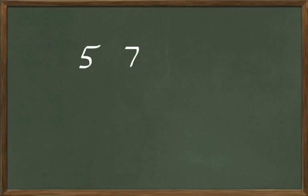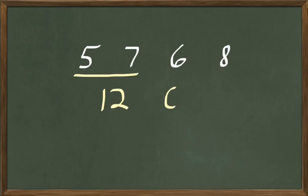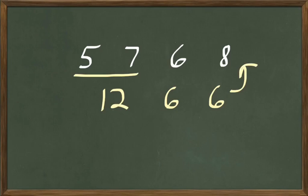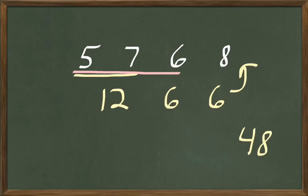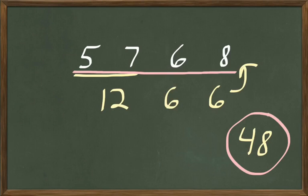Let's do 5 and 7 less 6 multiplied by 8. How many are 5 and 7? 5 and 7 are 12. And less 6: 12 less 6 are 6. And how many are 6 multiplied 8 times? 8 times 6 are 48. So 5 and 7 less 6 multiplied by 8 are 48.